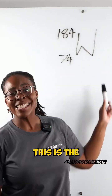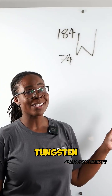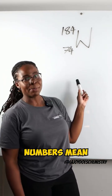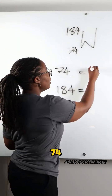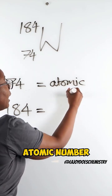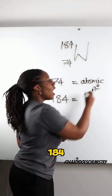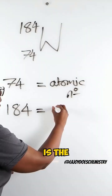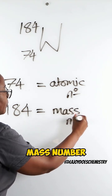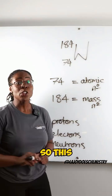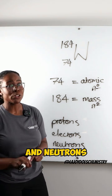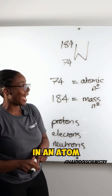Believe it or not, this is the symbol for tungsten, my favorite element. But what do these numbers mean? 74 is the atomic number and 184 is the mass number. So this helps us to figure out the number of protons, electrons, and neutrons in an atom.